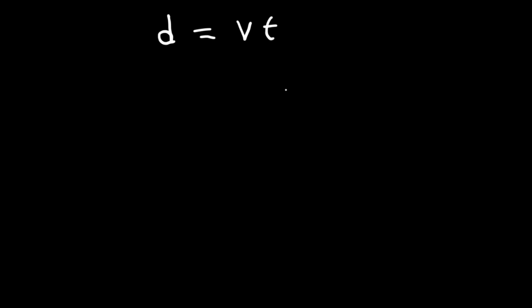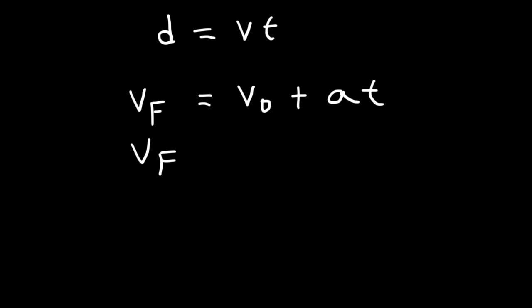When an object is moving with constant acceleration, there are four equations you need to know. The first: the final speed is equal to the initial speed plus the product of the acceleration and the time. There's also this equation: the square of the final speed is equal to the square of the initial speed plus two times the product of the acceleration and the displacement.